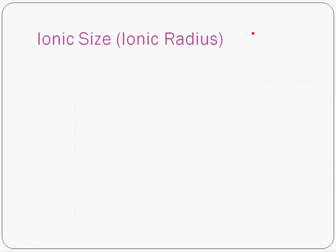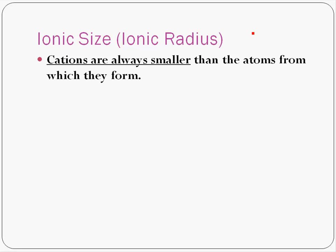So let's talk about the trends in ionic size as you go through the periodic table. One thing to know is that cations are always smaller than the atoms from which they're formed. So if we have copper, if that's the relative size of the copper atom, then copper 2 plus would be smaller.